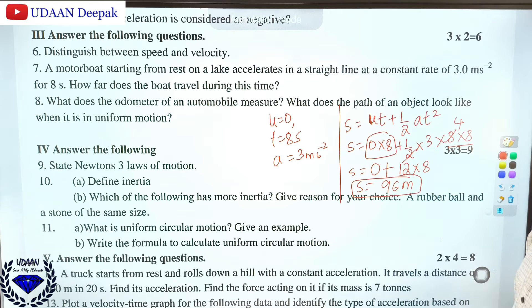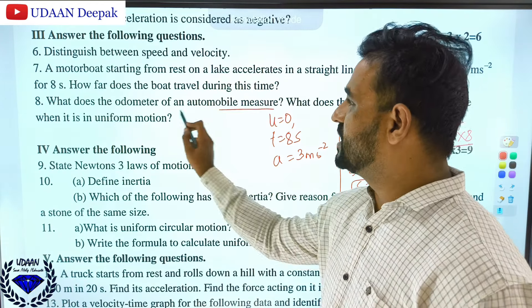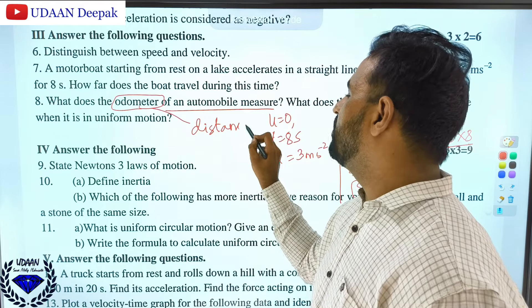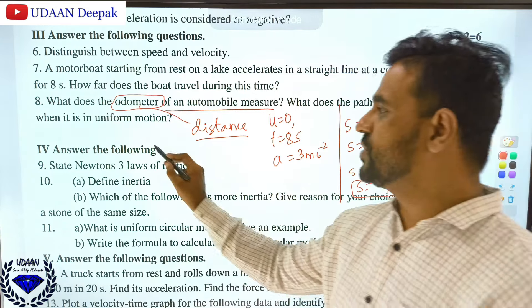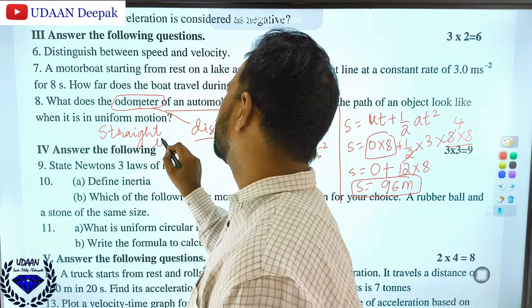What does the odometer of an automobile measure? The odometer measures the distance traveled by the body. What does the path of an object look like when it is in uniform motion? The answer is straight line.